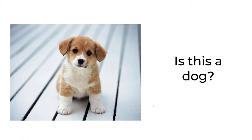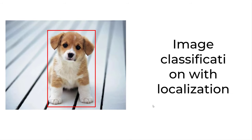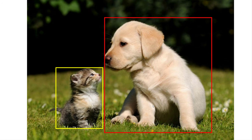For image classification, you try to classify the entire image as one of the classes — for example, is this a dog or not? Image classification with localization means you not only classify the image as one of the classes, but you also find the location of that object within the image.